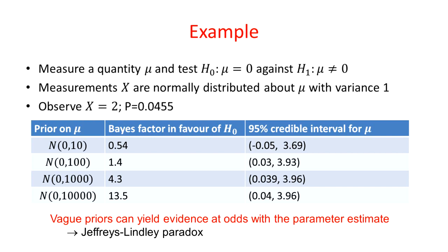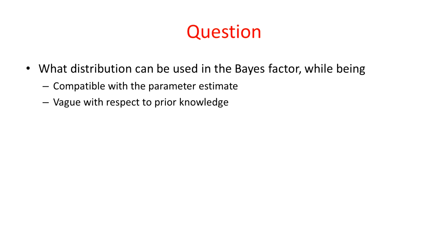This is the essence of the Jeffreys-Lindley paradox. If your prior is too vague, you can get evidence that seems to be at odds with the parameter estimate and with a frequentist analysis. What we would like is to find a distribution that we could use in a Bayes factor, which remains somehow compatible with the parameter estimate we get, but is still vague with respect to prior knowledge. How can we do that?